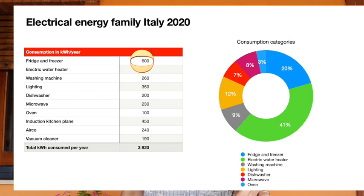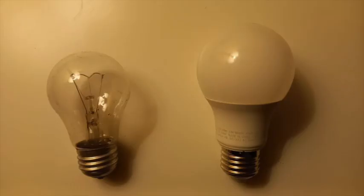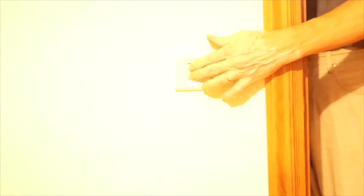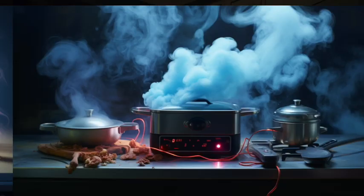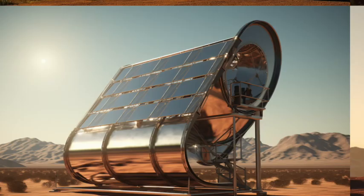Correct the table again. With a customized table you can see what you can save on by optimizing technology or habits, and what you can replace with other energy sources — for example, cooking on gas, biogas, or even wood, or heating water with solar energy, gas, or wood.